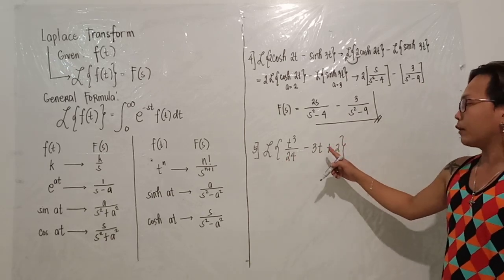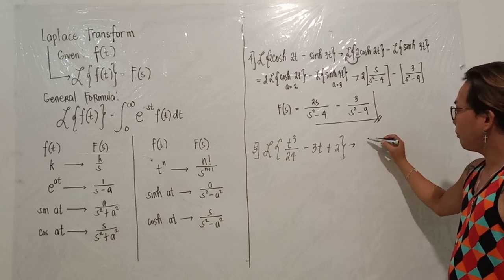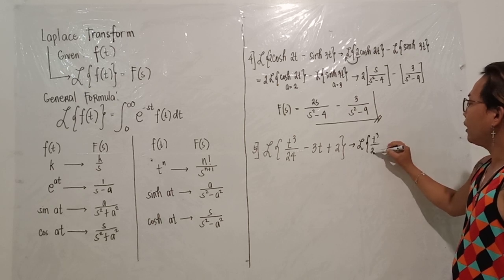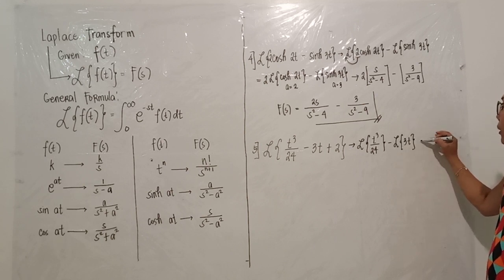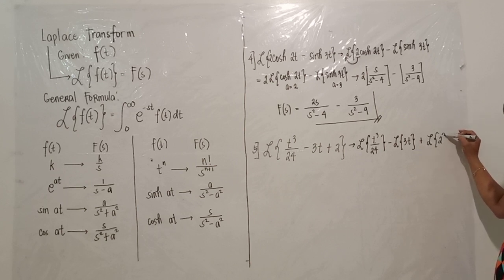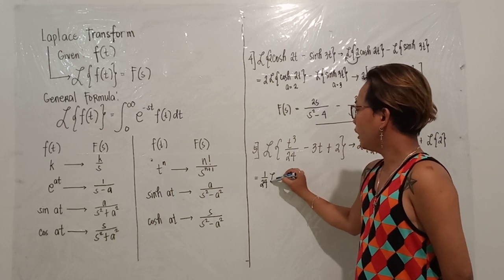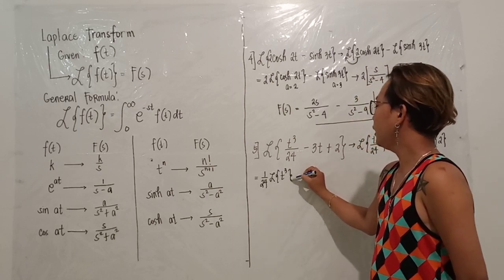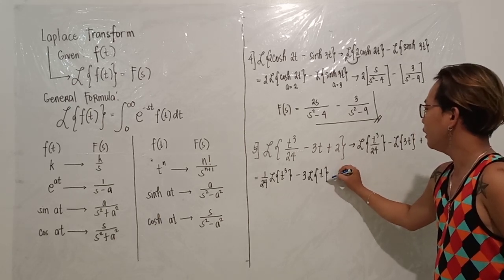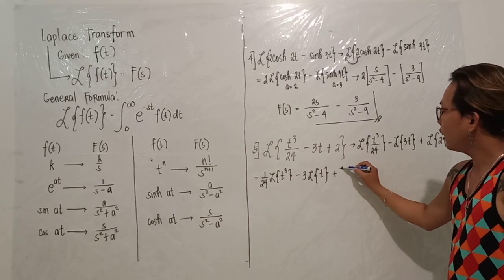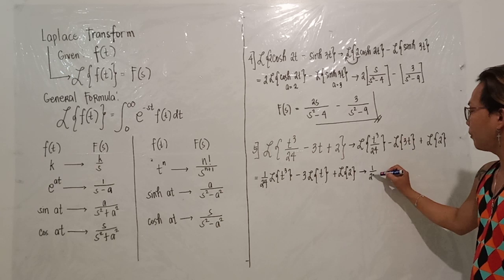The next example is to get the Laplace transform of the quantity t cubed over 24 minus 3t plus 2. Applying linearity, we split this into: 1 over 24 (which is a constant) times the Laplace transform of t cubed, minus 3 (also a constant) times the Laplace transform of t, plus the Laplace transform of the constant 2.